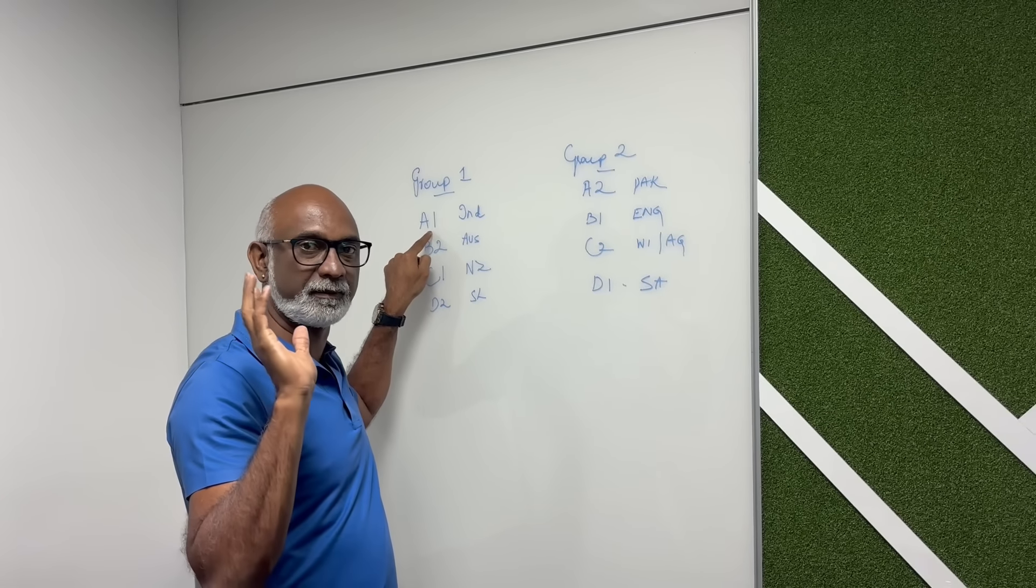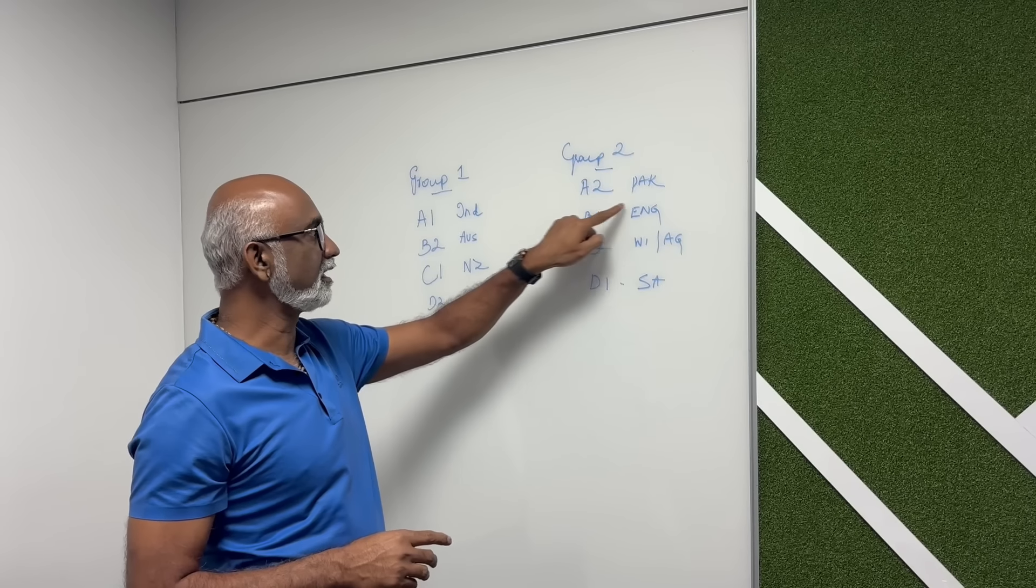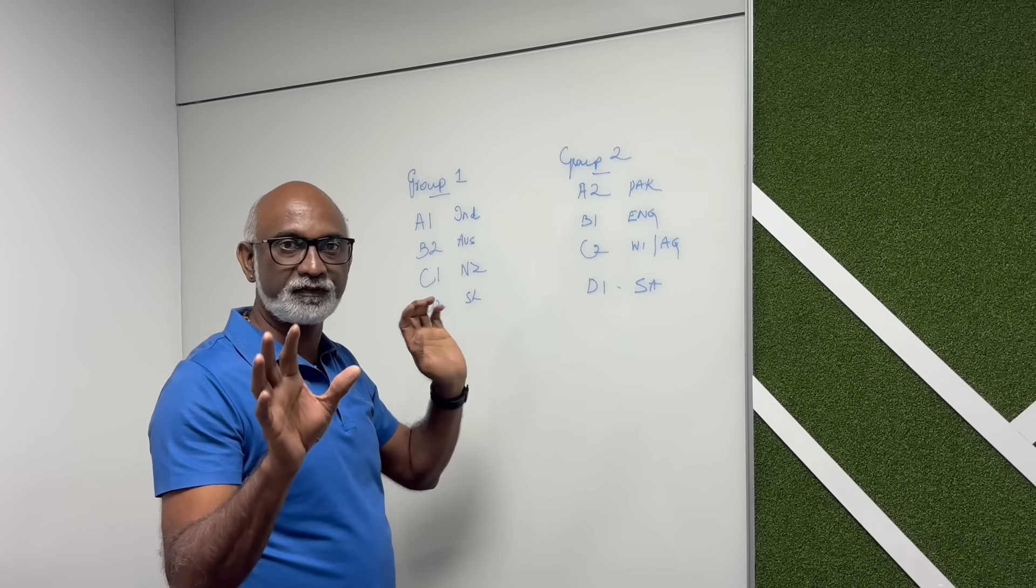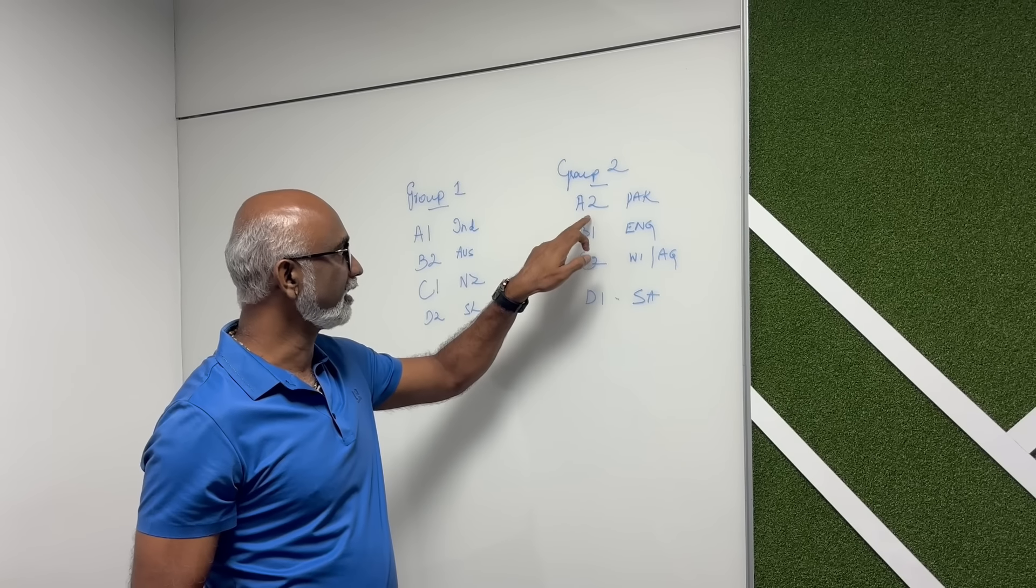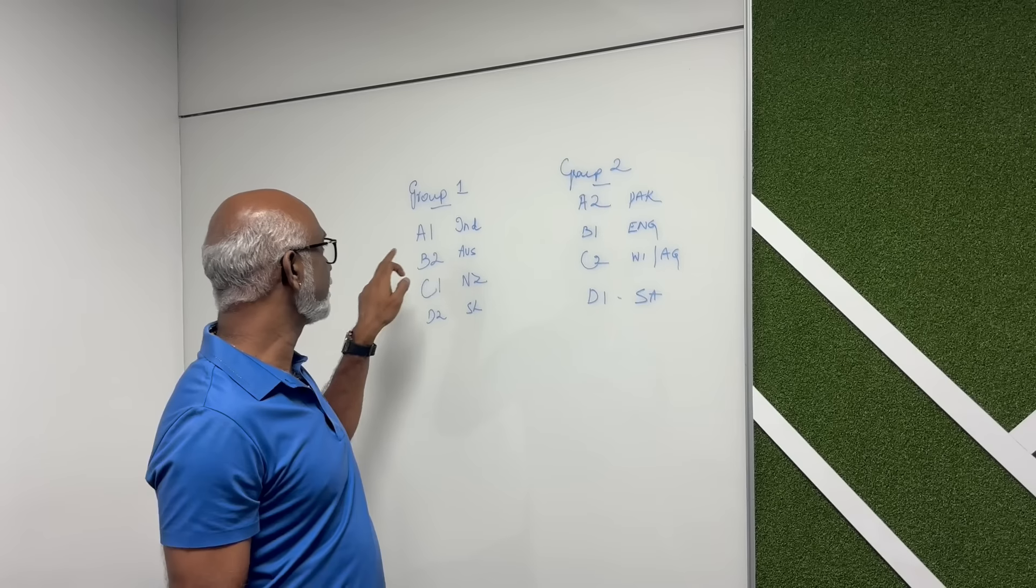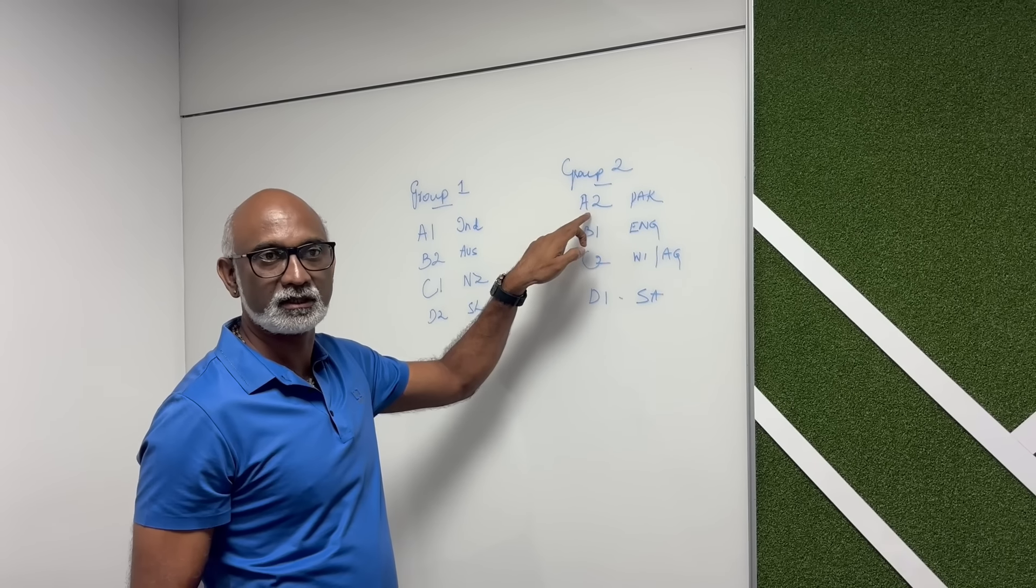They brought one team from Group 1 and 2. When they are brought up to the group stage, they are designated as A1 and A2. The same thing with Pakistan. If India is A1, then the other team is A2.